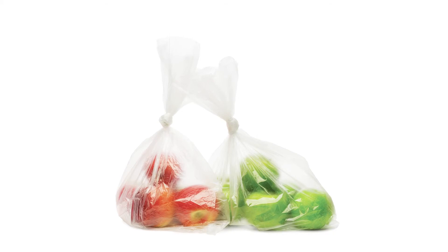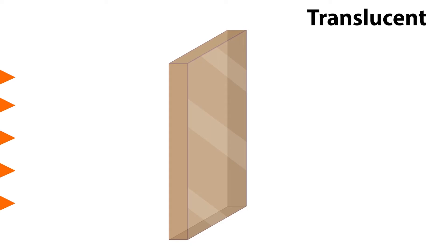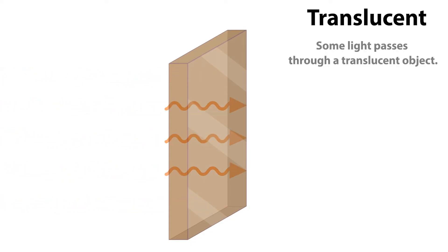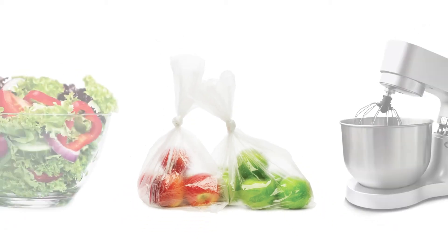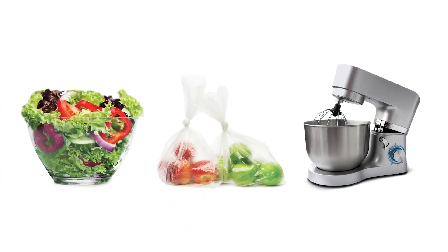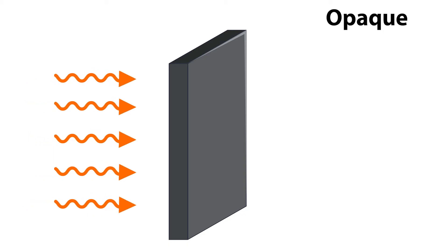You can see that there are apples in the plastic bags, but you cannot see them clearly. The plastic bags are translucent — they allow some light to pass through. You can't see what is in the metal mixing bowl, as it is opaque. Opaque materials do not allow light to pass through.